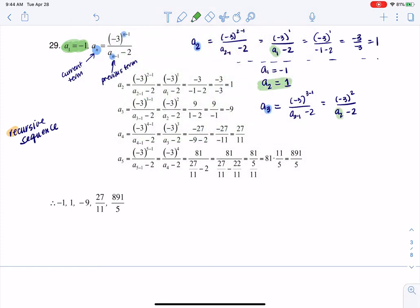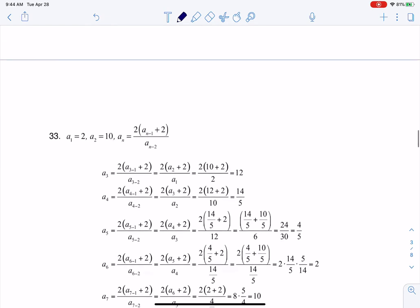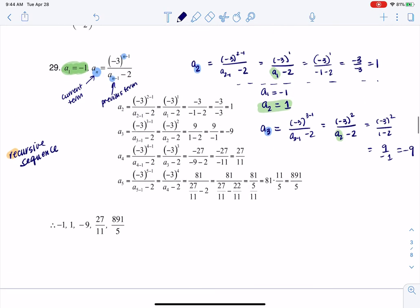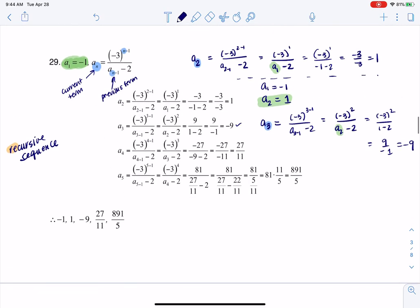And I'm going to substitute that in right there. So this is going to become negative 3 squared over 1 minus 2. That's 9 over negative 1. Oops, that's a negative 1 there. Which is negative 9. Ooh, I keep hitting wrong buttons. Sorry about that. All right. And that's where I'm getting this equation.